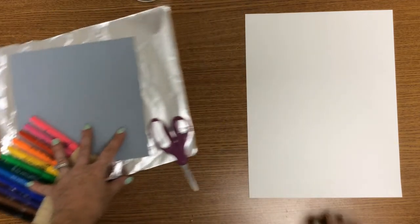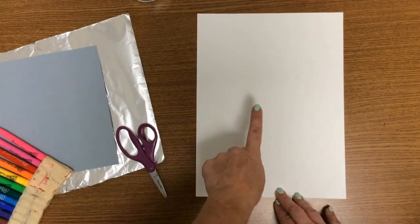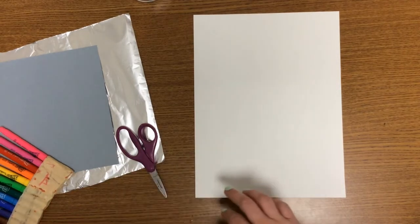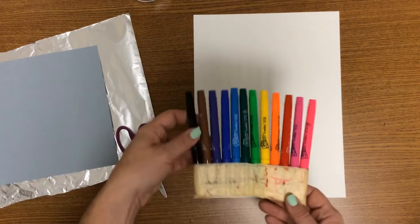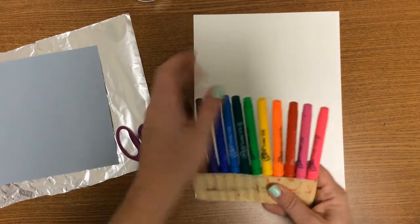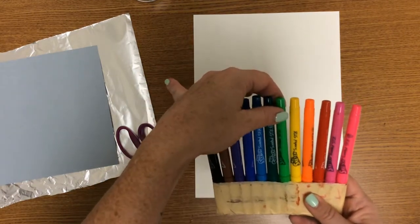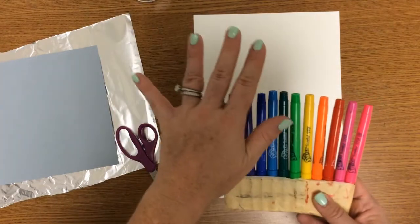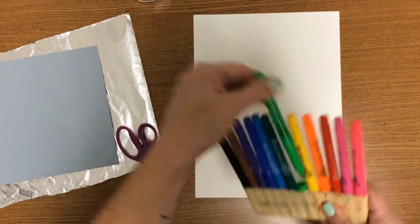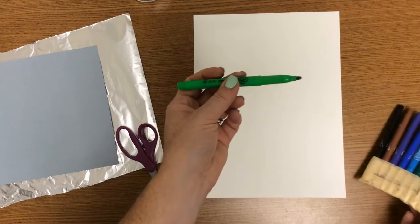The first thing we're going to do is create our acorn shape. I want you to take any color marker—I have my markers all together like this so they don't roll around—and I'm going to use this green here.